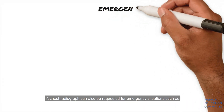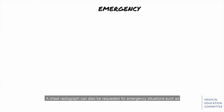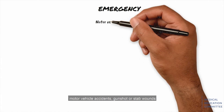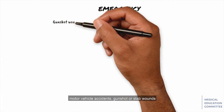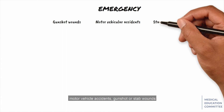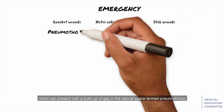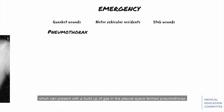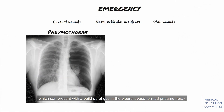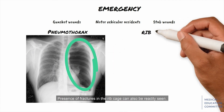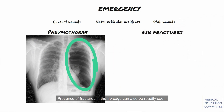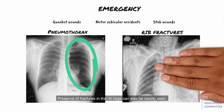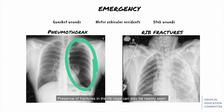A chest radiograph can also be requested for emergency situations such as motor vehicle accidents, gunshot, or stab wounds, which can present with a buildup of gas in the pleural space termed pneumothorax. Presence of fractures in the ribcage can also be readily seen.